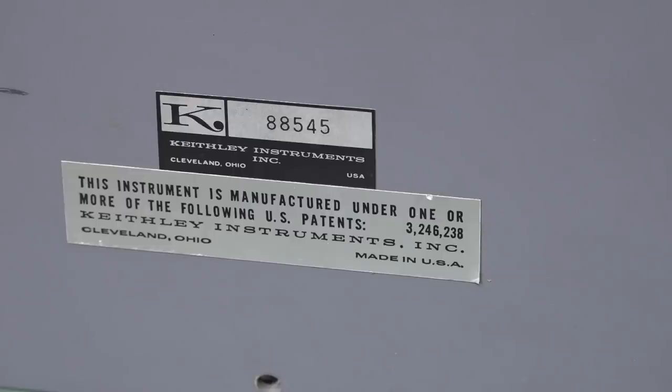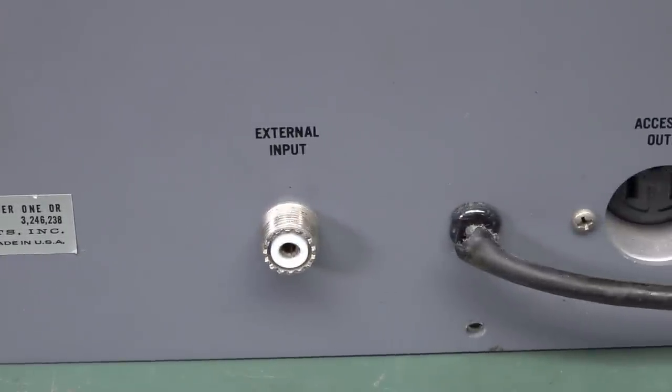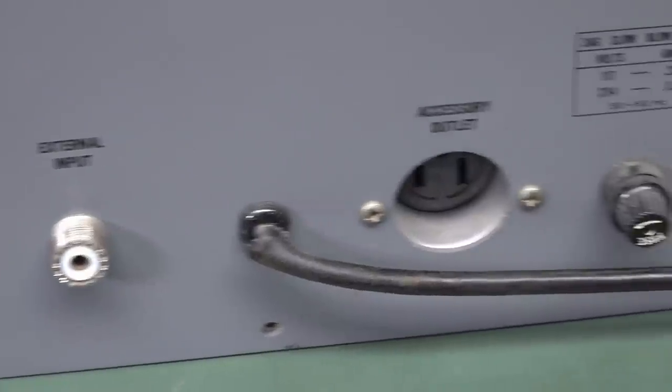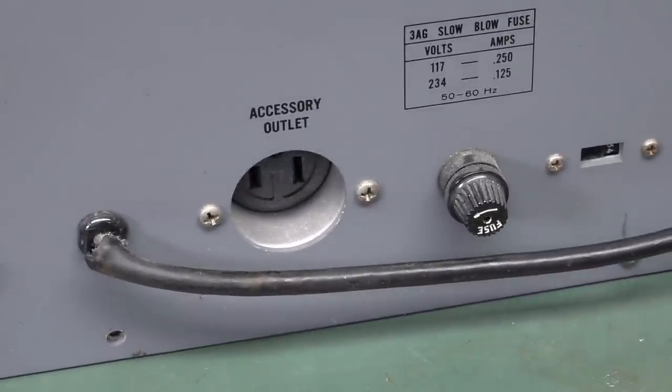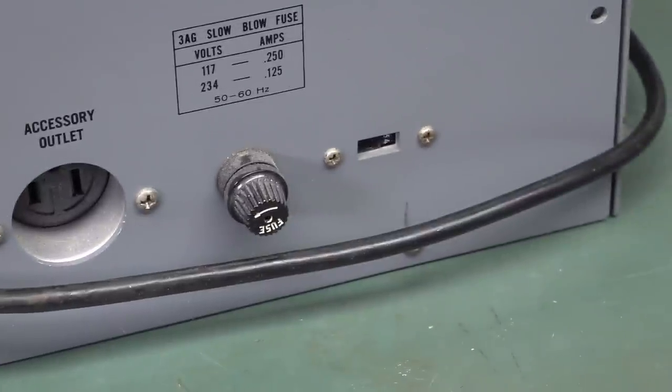For those playing along at home, maybe the United States of America, Cleveland, Ohio. And I actually checked, the address in the original manual from this, from, like, 1970, is still the Keighley address today. They're still in the same building. I wonder if it's still the same phone number and everything. Anyway, what we've got in the back, we've got the external input. That's that, you know, if you want to feed up to 1,000 volts, because it's only got 100 volts internal. It's an accessory outlet, so you can power other main stuff with it. And a good old-fashioned switching rubbish. We've got a good old-fashioned transformer with voltage selection.